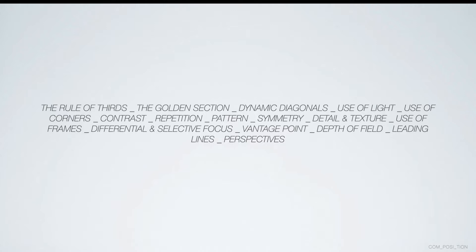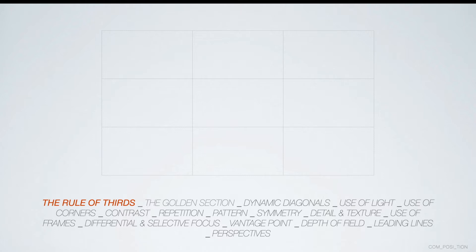We're going to delve back into the idea of the rule of thirds. This is a really good compositional idea you can apply to your photographs or to any form of design. By splitting up your frame into three sections — horizontal or vertical — placing your object of interest on one of those intersecting points will have a massive impact on your composition. It will make the composition stronger and aesthetically more pleasing.